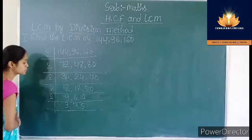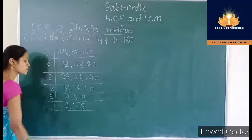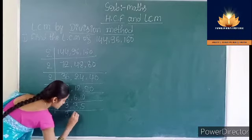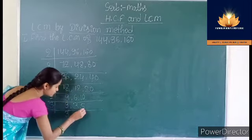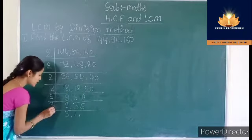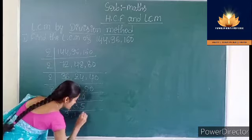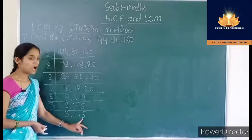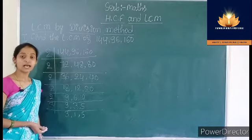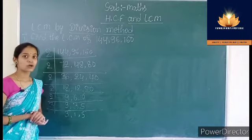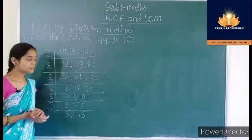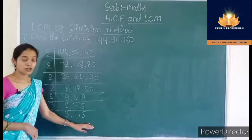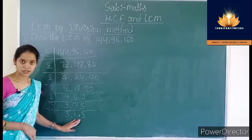9 is not divisible by 2, 3 is not divisible by 2, and 5 is not divisible by 2. So I will take 3. 9÷3=3, 3÷3=1, and 5 is not divisible by 3, so write 5 as it is. Now we cannot divide 3, 1, and 5 further.